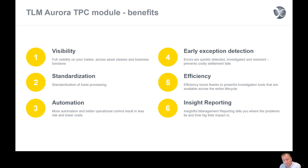The benefits include better visibility of all your trades that are actually failing or due to failure — across all asset classes and business functions. There is a lot of standardization in the trade processing, because we will have referential data kept in a central place — think about standard settlement instructions. With the workflow, we will also automate each and every step in that trade process workflow, enabling more automation and better operational control, resulting in less risk and lower costs.